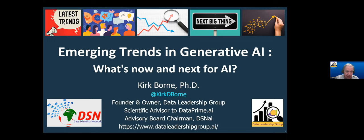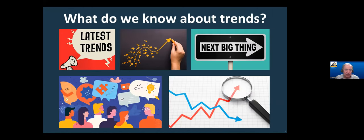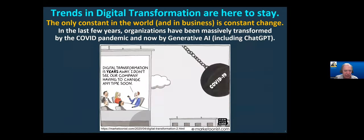I'm going to start off talking about emerging trends in generative AI — what's now and what's next for AI. How do we know about trends? People talk about it, you see it in the news. Trends often identify something new that's developing into the next big thing. In the context of the last couple of years, one of the great trends in business is what people call digital transformation — though I think we should ideally call it digital disruption, because it's really the disruption of business models and the ways we do business, ways that we work, jobs that we apply for. The way that everybody works is changing.